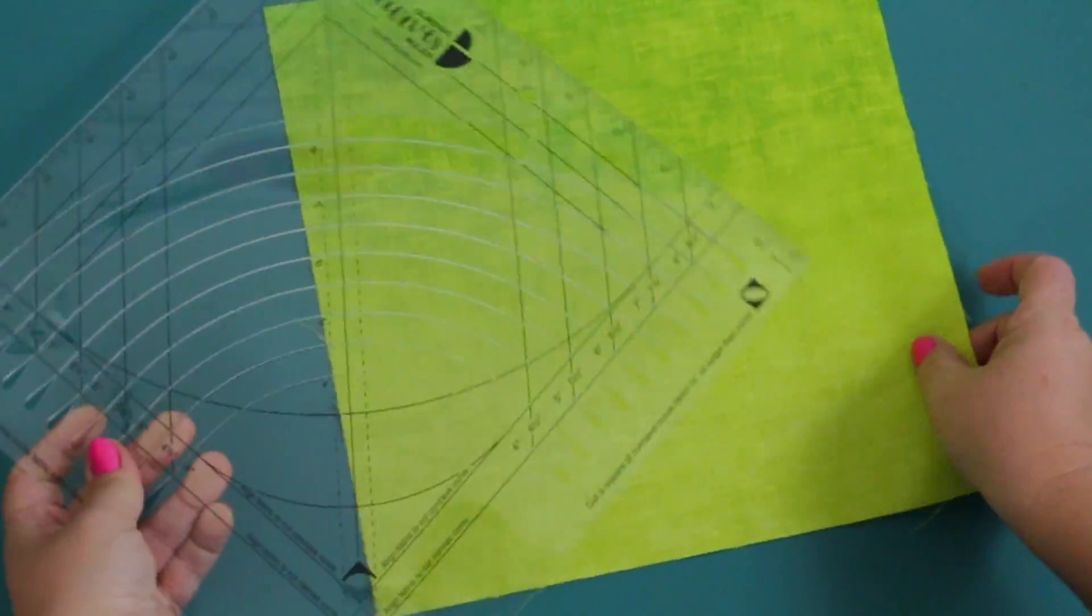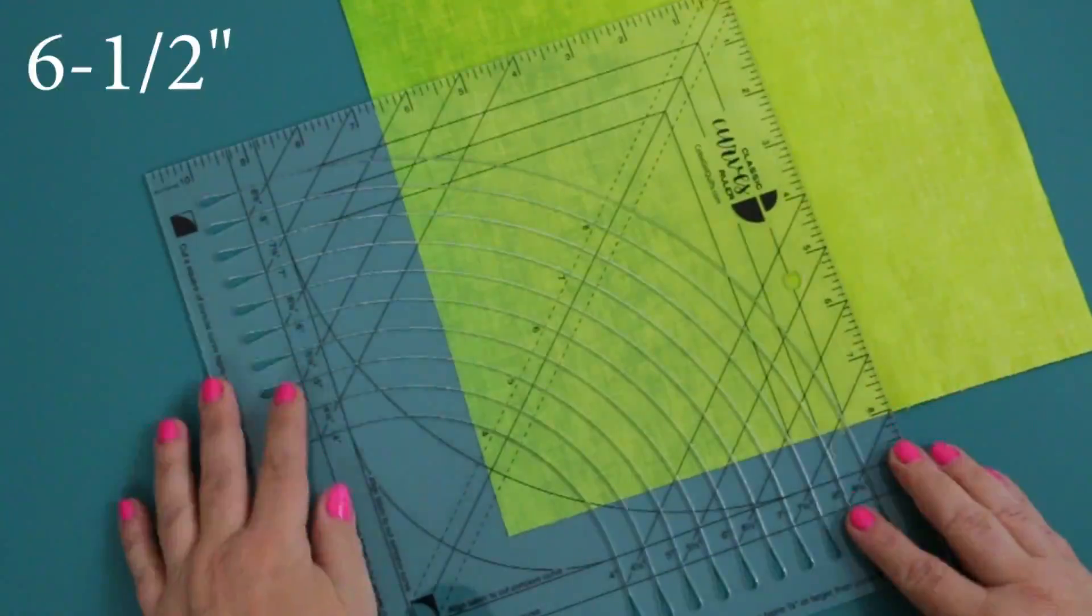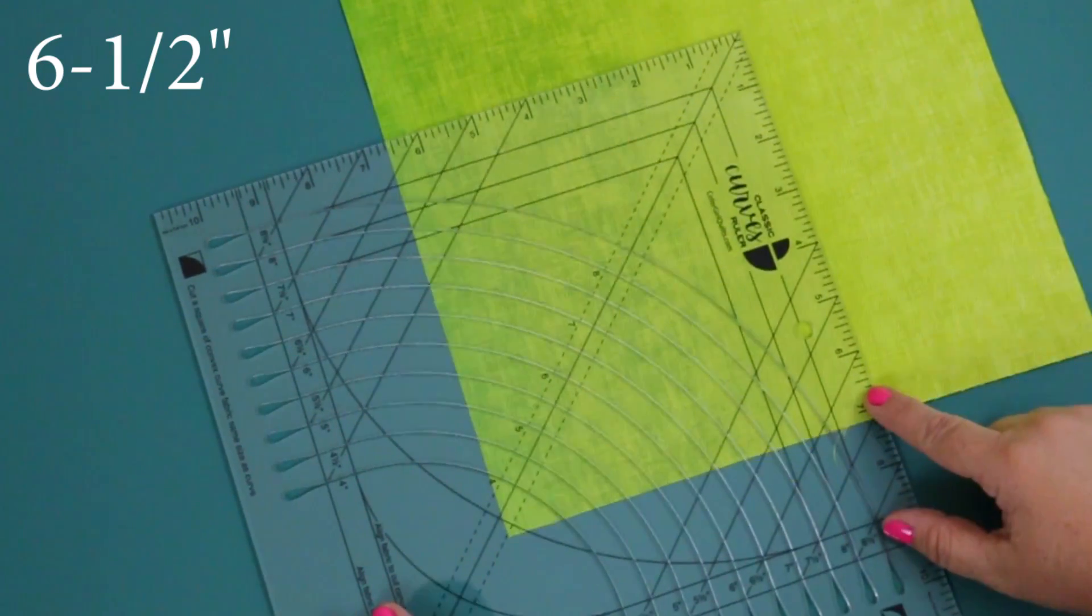First thing we're going to do is start with a convex curve. In order to do this, we want to begin with a fabric square that is the same size as the desired curve. So in this case, we are going to cut a 6-1/2-inch square.